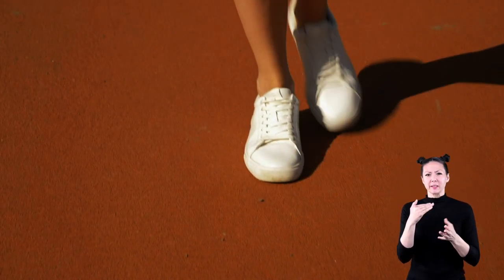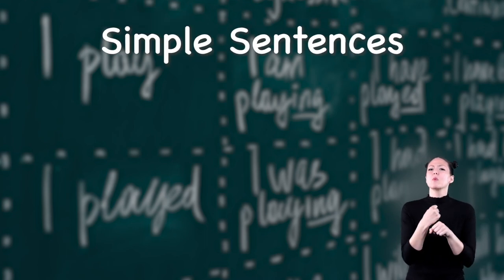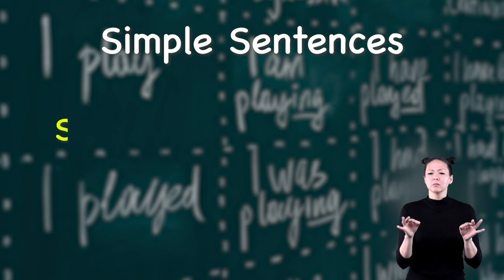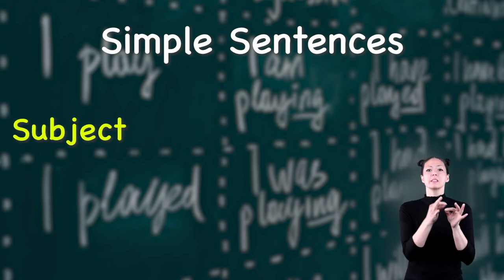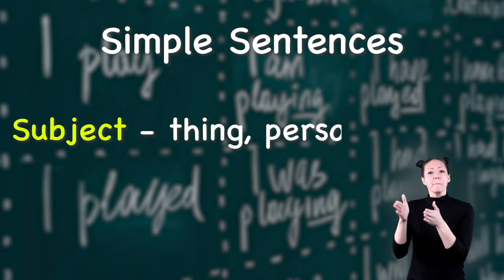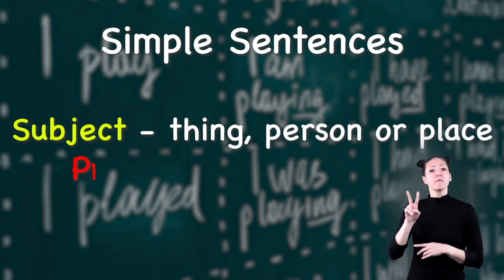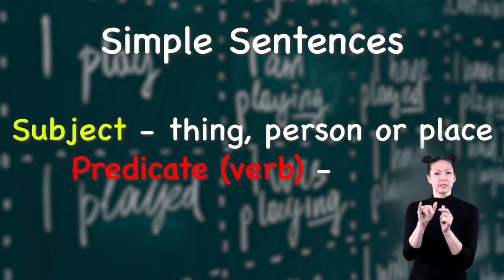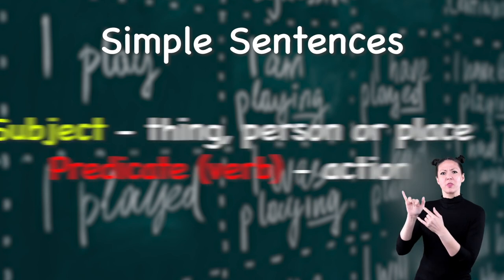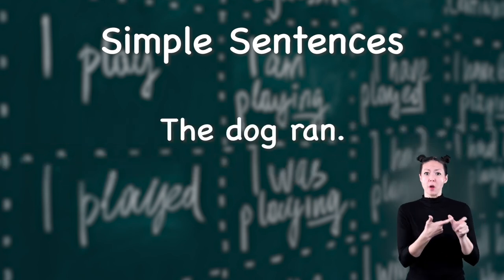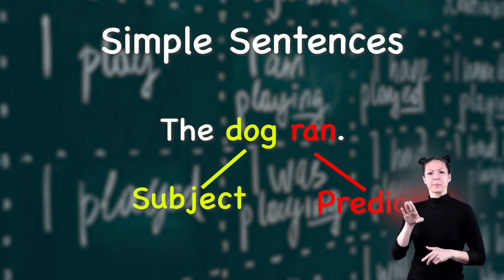Let's step back for a second. First, let's talk about simple sentences. All you need to create a simple sentence is a subject and a predicate, or verb. The subject of a simple sentence is the thing, person, or place that the sentence is about. The verb or predicate is the action taking place or is related to something about the subject. In our sentence 'the dog ran,' 'dog' is the subject and 'ran' is the verb. It's that simple!